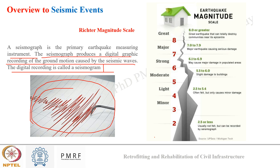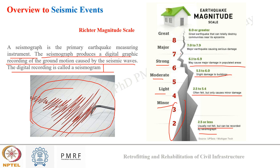To quantify earthquake magnitude we use the Richter magnitude scale. According to this scale, an earthquake of magnitude 2 to 3 is a very minor earthquake — usually not felt but recorded by seismographs. Magnitude 3 to 4 earthquakes are often felt but do only minor damage. Magnitude 5 to 6 can cause slight damage to buildings. Above magnitude 6 is dangerous; magnitude 6 to 7 can cause major damage, 7 to 8 causes major damage with serious threat to human life, and above 8 will totally destroy the community near the epicenter.